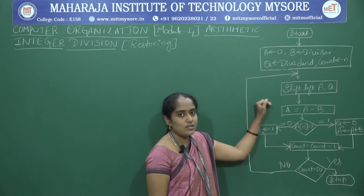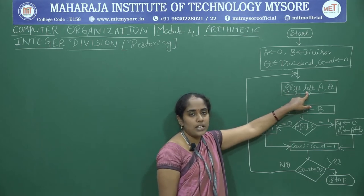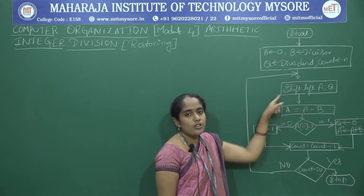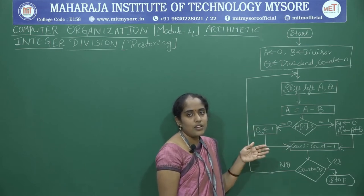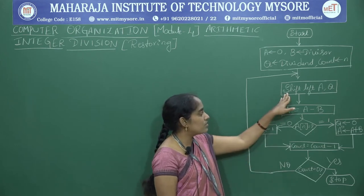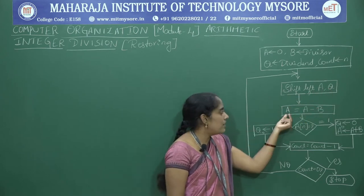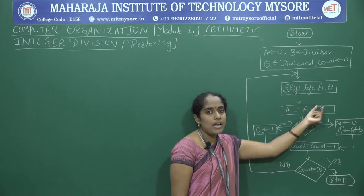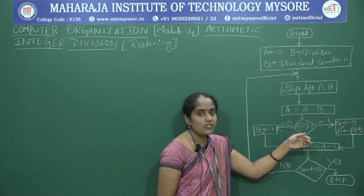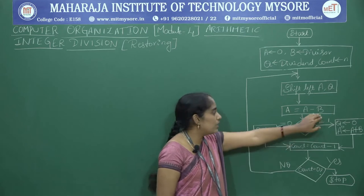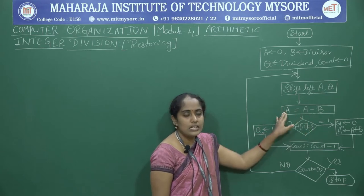The next step is very important: we take the shift left operation. In multiplication we use right shift, and in Booth's algorithm we also use shift right. But here we use shift left. So shift left A and Q. Then A equals A minus B — instead of direct subtraction, we take the 2's complement of B, add it to A, and store the result in A.